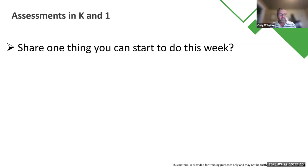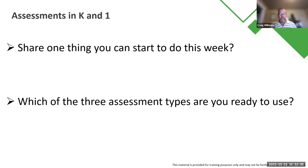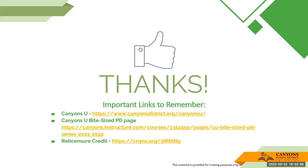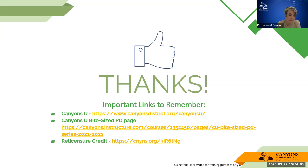So, one thing I want you to do is share one thing you can start to do this week — whether it's the rubric, the game, or the online assessment. Which of the three assessment types are you ready to use? Maybe you're already using one and ready to try another. We'll leave the rest of this up for any questions. Remember, if you are on Canyons U, you can always access this there — there's a bite-sized PD, and that's where you go to get your license credit. I'm going to stop recording.